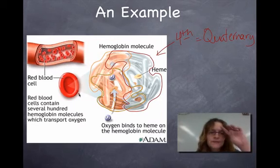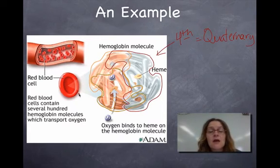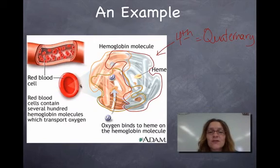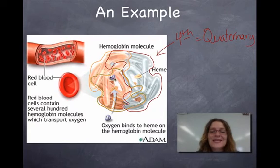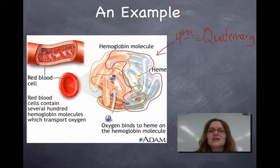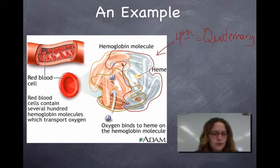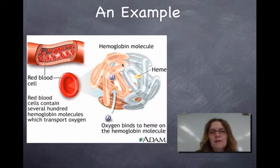Hemoglobin is a transport protein, which we're going to get into the uses and functions of proteins tomorrow. Hemoglobin is found on the surface of your red blood cells and it carries oxygen. You can see oxygens binding to these little structures we call hemes. That's how your blood carries oxygen all around your body for all the cells, because our cells need oxygen.